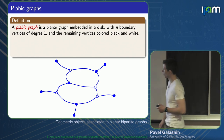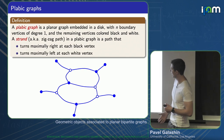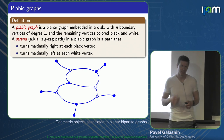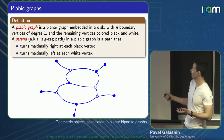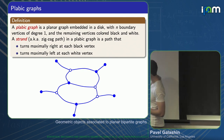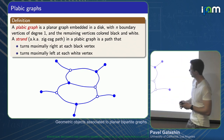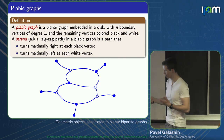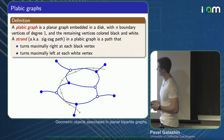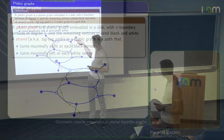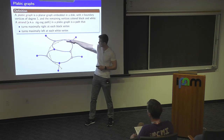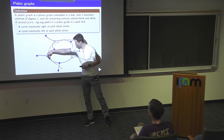One important notion for a plebik graph is the notion of a strand — many people call them zigzag paths. The way it's defined: it's a path in a plebik graph which makes a sharp right turn at every black vertex and a sharp left turn at every white vertex. Like on a roundabout, it's the first right or the first left. Here's an example of a strand — it's a path on the graph, drawn past the midpoints of the edges, where it turns right at the black vertex, then left at the white, right, left, right.